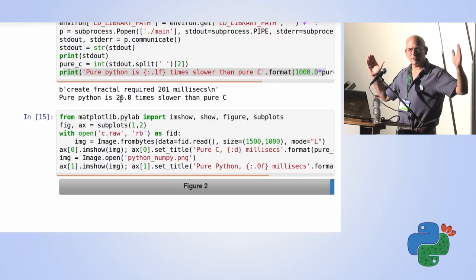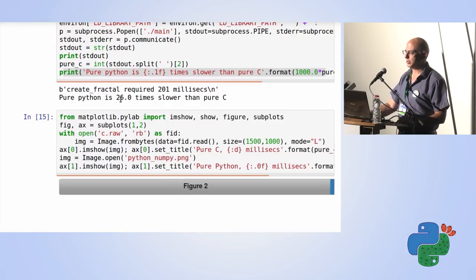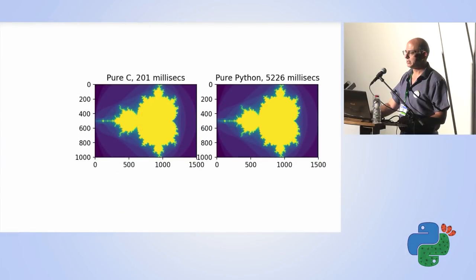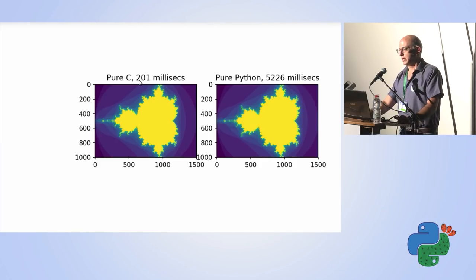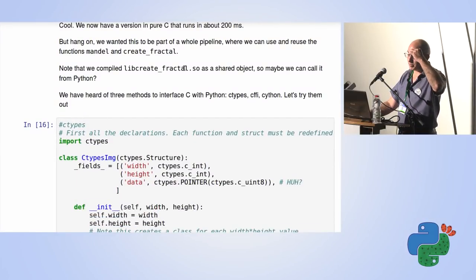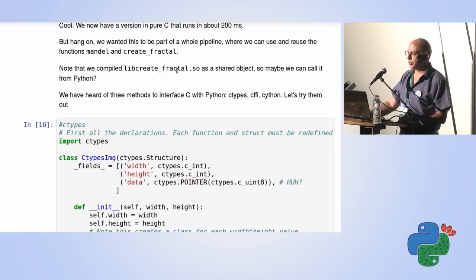We've set out our spectrum of performance: on one end we've got Python, on the other end we've got C. Let's move on to what we actually came here to do. We compare the two pictures to confirm everything looks good — Python at 5.2 seconds, pure C at 200 milliseconds. We want this function to be part of a whole Python pipeline, so we don't want to use the main function from our contractor. We want to call into create_fractal or mandl from Python. Let's try all three methods: C-types, CFFI, and Cython.